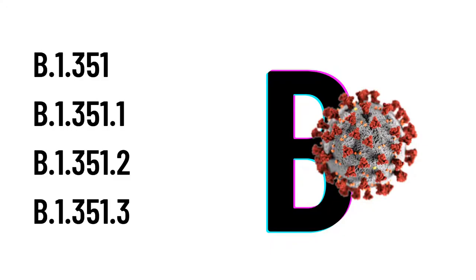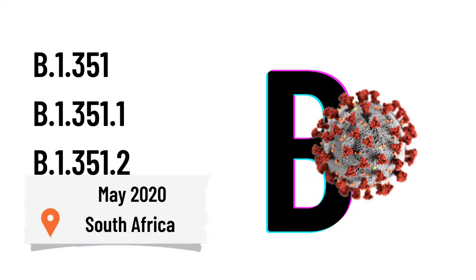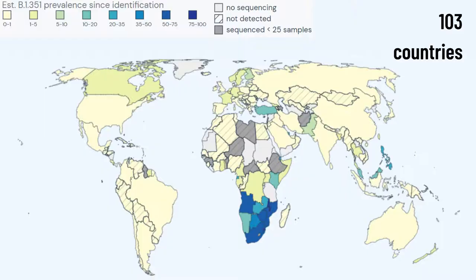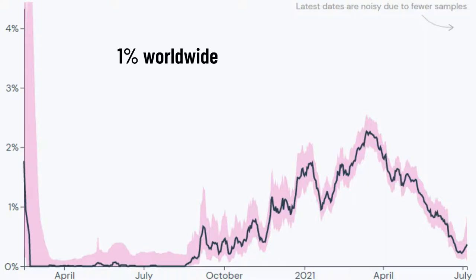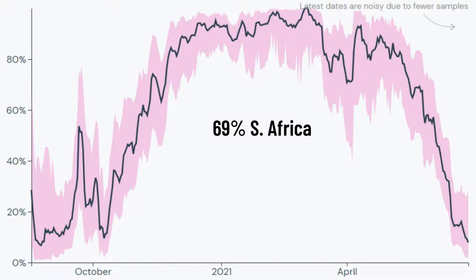The SARS-CoV-2 beta variant is a mutated strain from the original SARS-CoV-2, and it includes these strains. The beta variant was first found in May 2020 in South Africa. As of July 2021, it has spread to at least 103 countries with a cumulative prevalence worldwide of 1%, while in South Africa it has a higher cumulative prevalence at 69%.